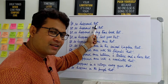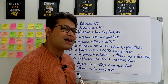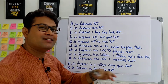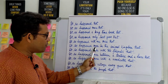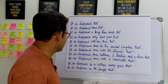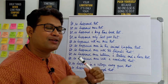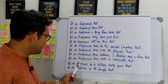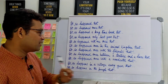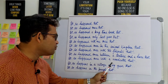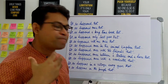You can begin your story with: 'It so happened that...', 'It so happened once that...', 'It so happened a long time back that...', 'It so happened only last year that...', 'It so happened with me once that...', 'It so happened once in the animal kingdom that...', or 'It so happened once with two friends...' — ideal for a story involving two friends and a bear. Again, 'It so happened once between a tortoise and a hare' works for that story, and 'It so happened once with a woodcutter' for another.